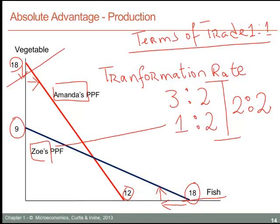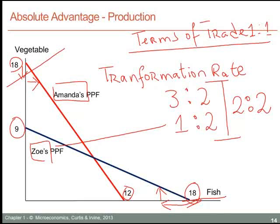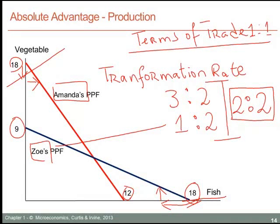Would this exchange rate be beneficial for Zoe at the same time? Without specialization, Zoe only gets one unit of vegetable for every two units of fish that she gives up. So if she were instead able to get two units of vegetables for every two units of fish that she sacrifices, she would be better off than the current situation. So an exchange rate of two to two would benefit both of these individuals.